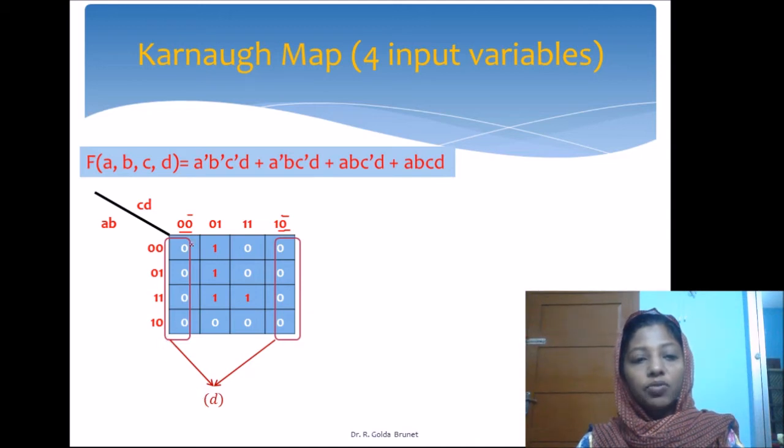Notice that when we group these four ones together and these four ones together, we had c+d and c̄+d, so we had two max terms with two literals each. But when we group eight zeros together, the number of max terms are also reduced. Instead of two max terms, we now have only one max term.